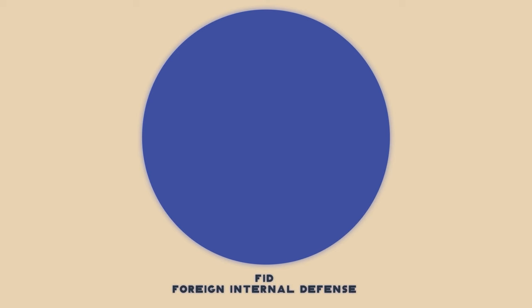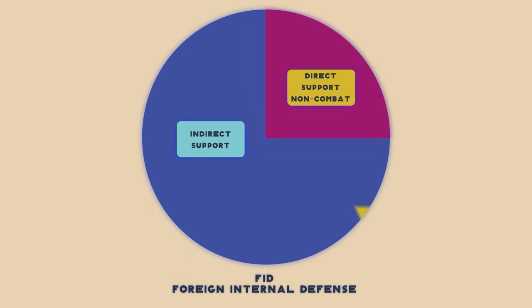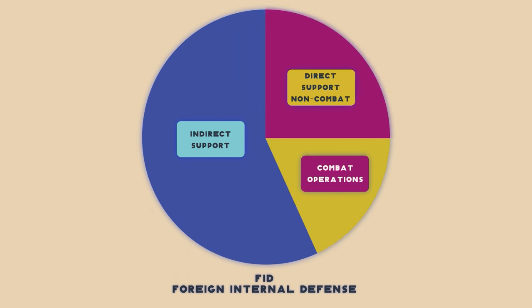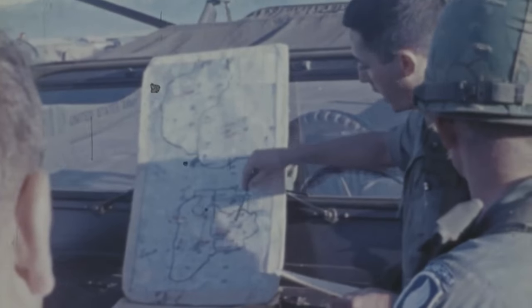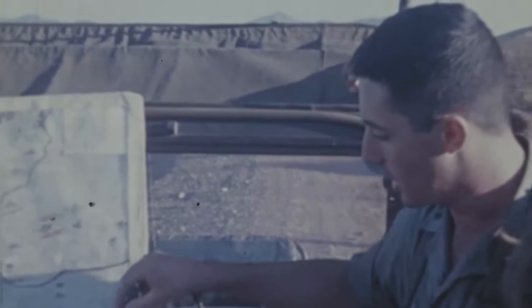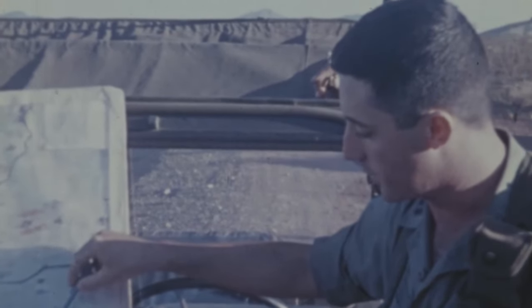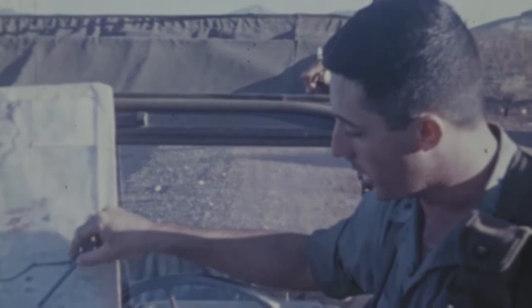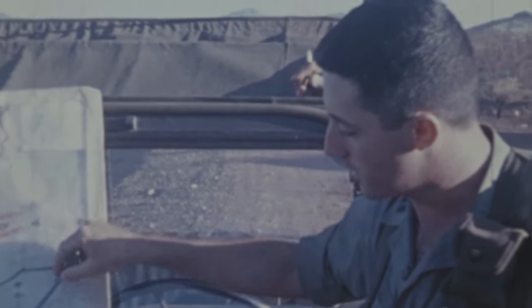In U.S. Army doctrine, there are three types of FID: indirect support, direct support non-combat, and combat operations. Today, conventional forces play a significant role in FID, as they did in South Vietnam. Conventional forces conduct and support FID operations across the warfighting functions and range of military operations, from indirect support to combat authorization.